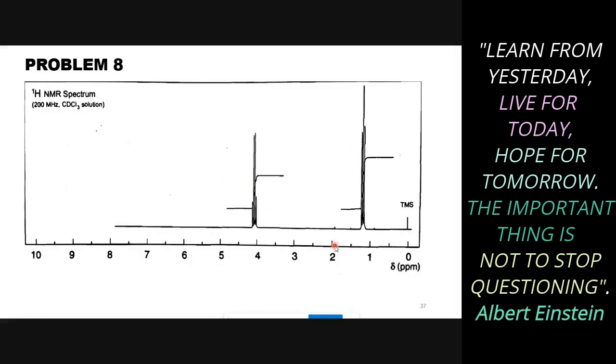Here is the proton NMR spectrum and it was recorded at 200 megahertz in CDCl3. It's a pretty simple spectrum. Only two signals are there. So we have a triplet here and a quartet here. If you look at the integrations, this is about two protons and this is slightly higher, so this could be three protons. So this signal at about 1.3, 1.4 ppm is appearing as a triplet and this signal at 4 ppm is appearing as a quartet.